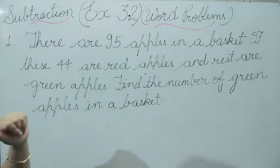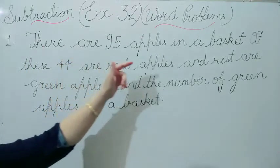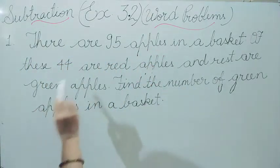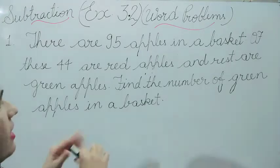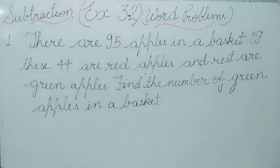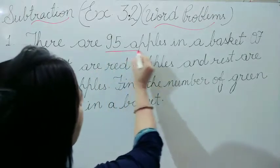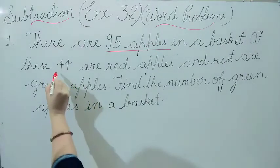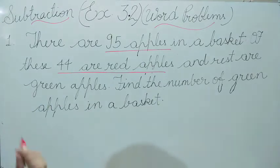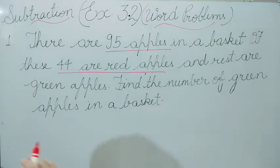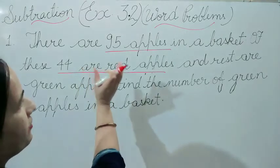One word problem is already here. There are 95 apples in a basket; of these, 44 are red apples and the rest are green apples. Find the number of green apples in the basket. Now, you have to find out — total apples are 95.